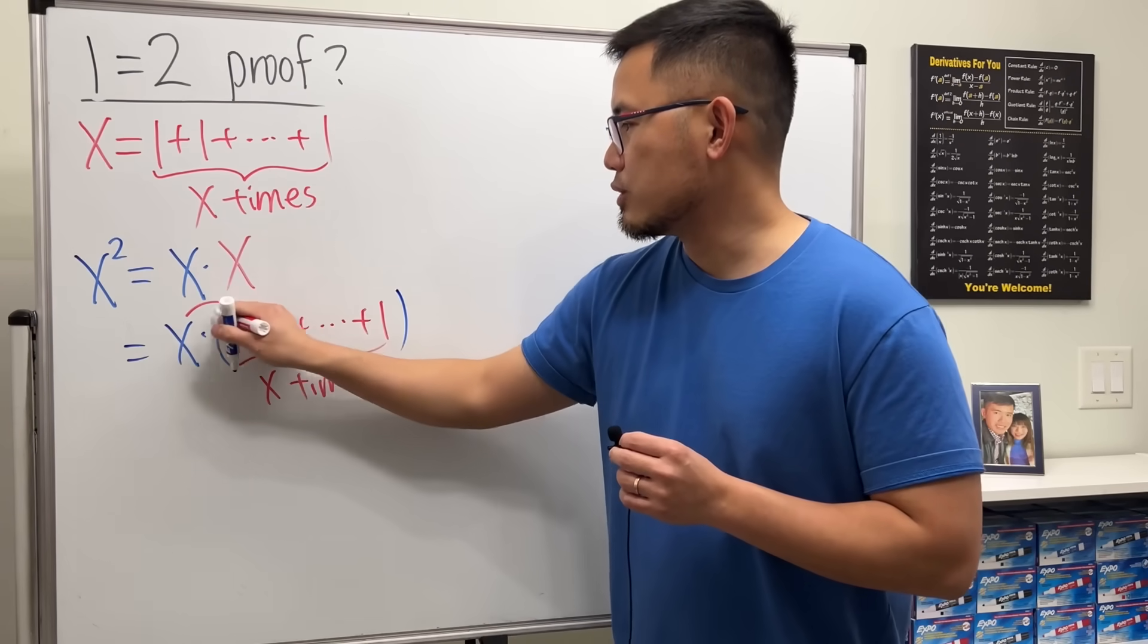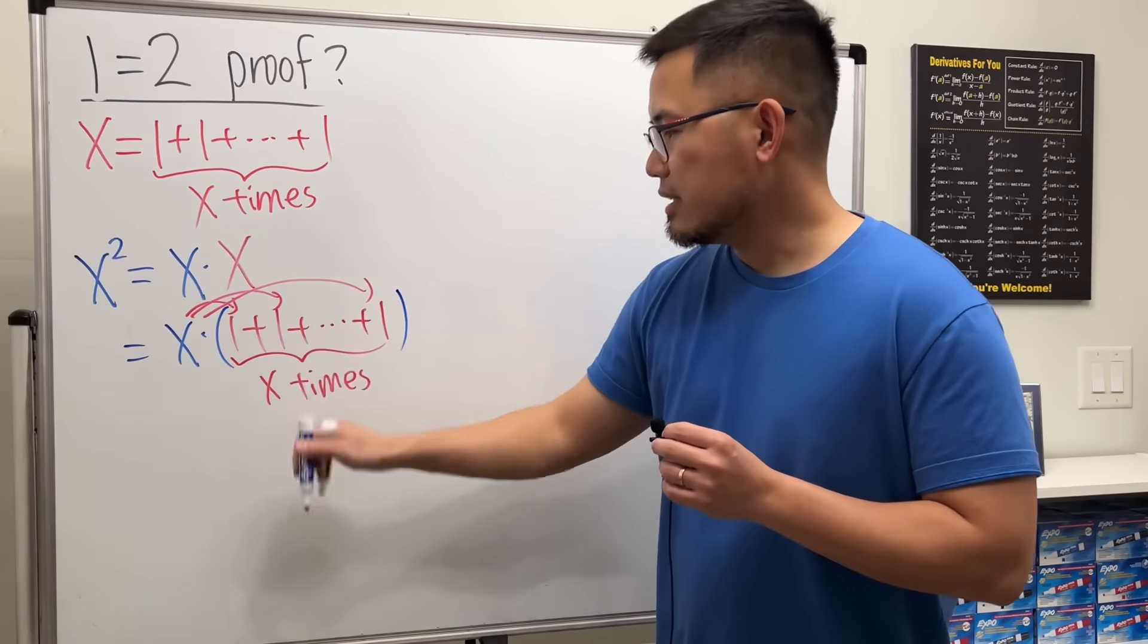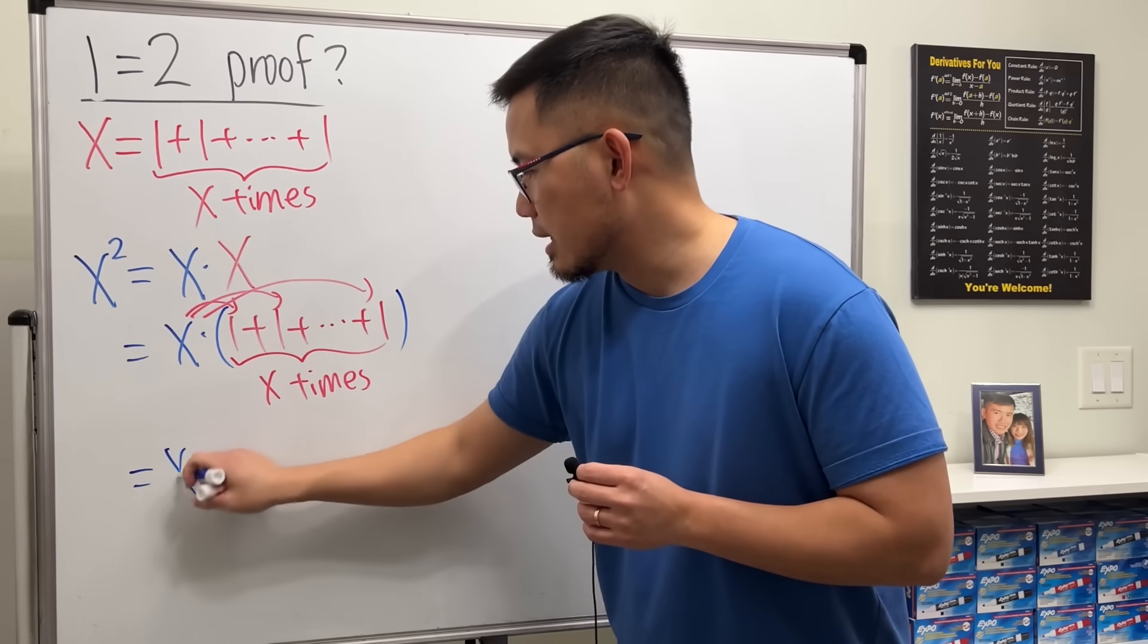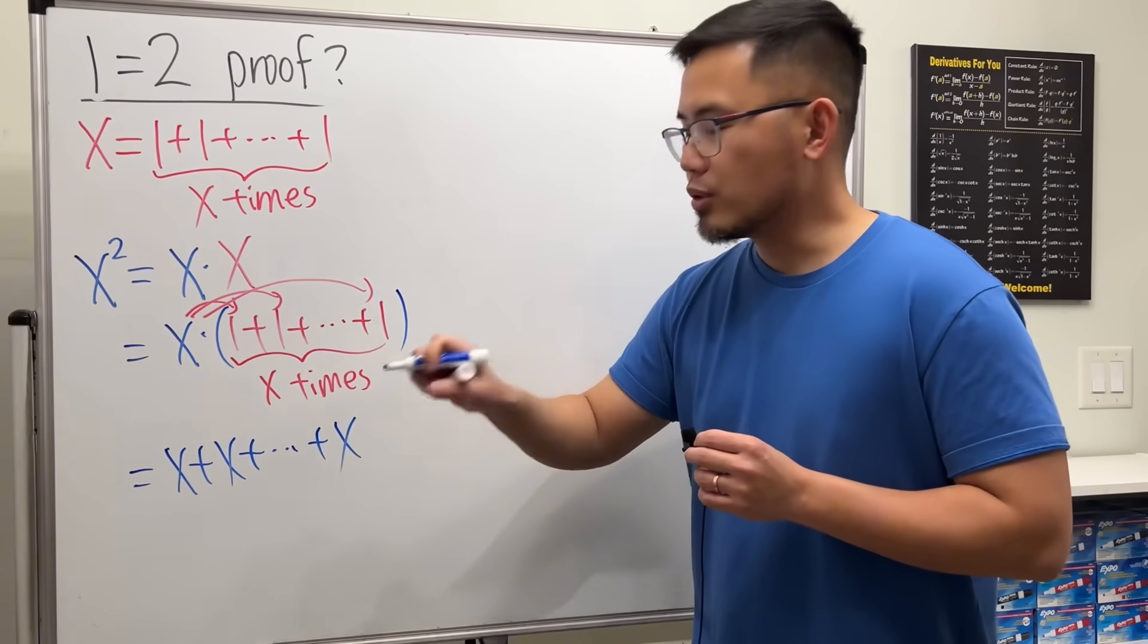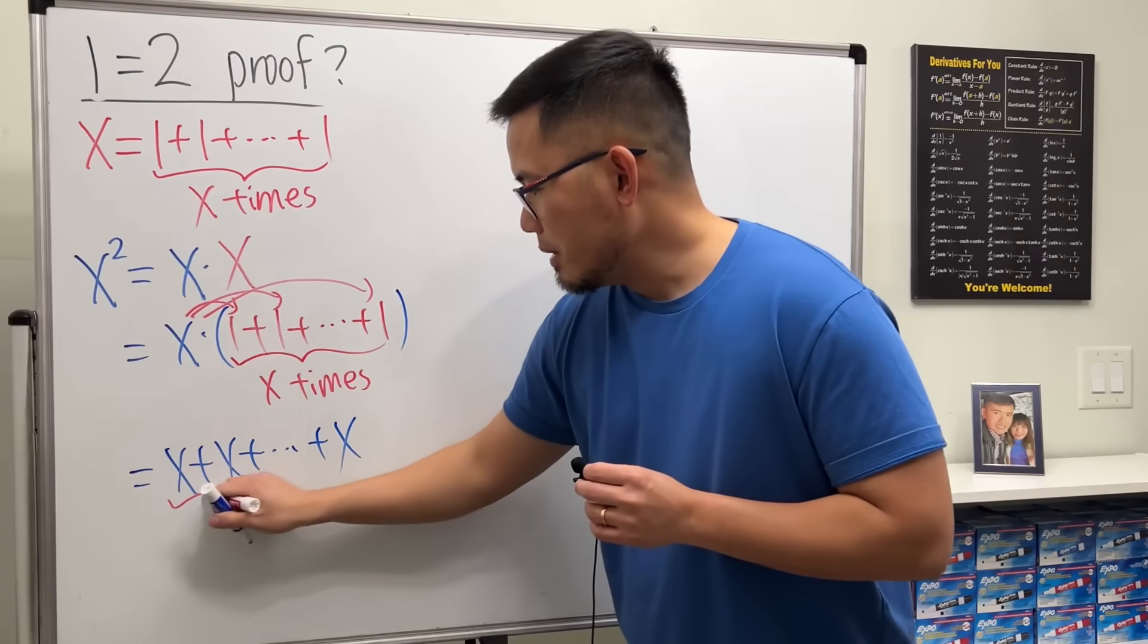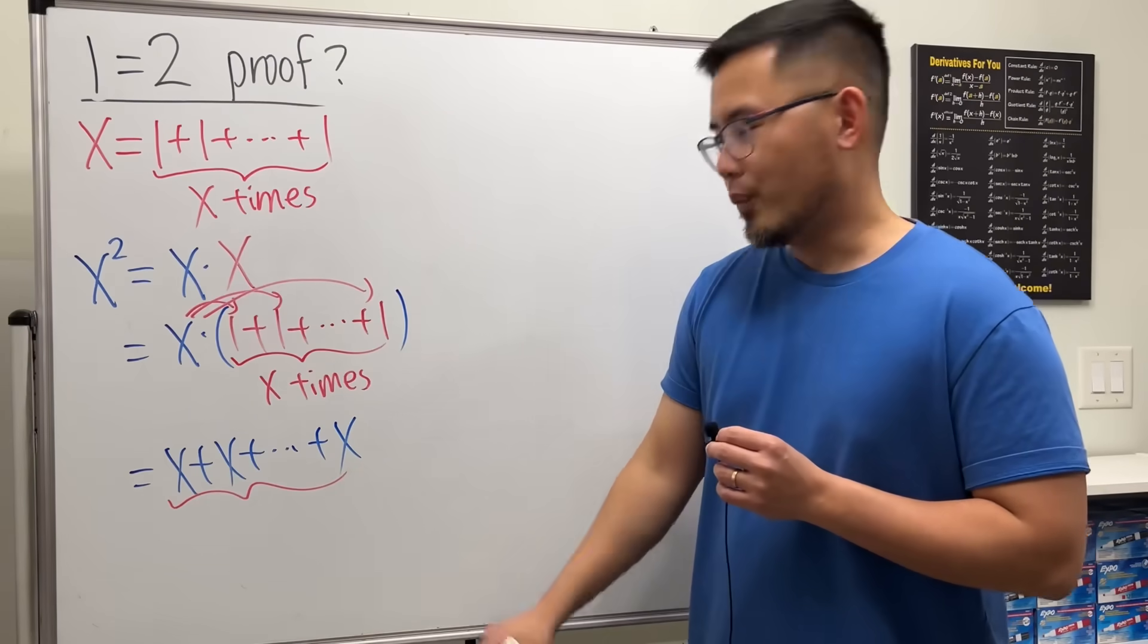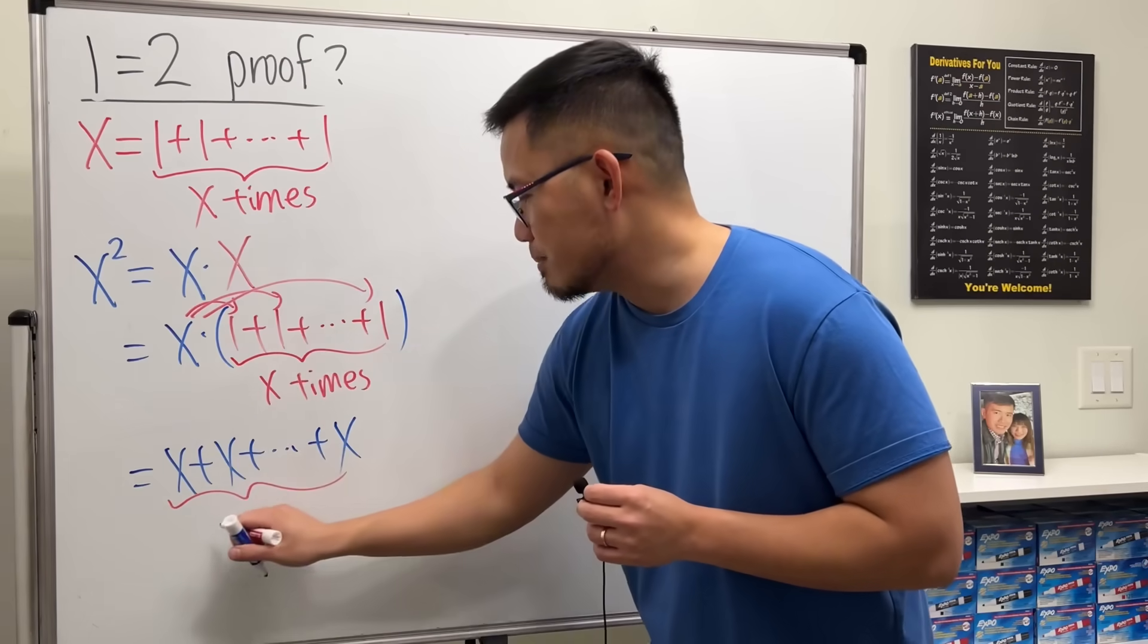Yeah, and then of course we have the X in the front. We can go ahead and just distribute the X inside, so we end up with X plus X plus dot dot dot. And of course the last one will also be X as well. How many X did we write down? Well, we wrote down the X X many times.